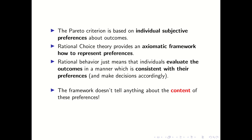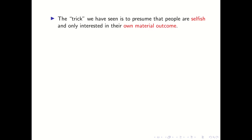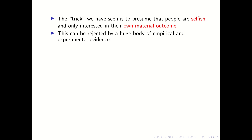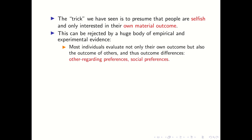Whether an outcome is evaluated as an improvement or as worse off depends on the content of preferences, and the axiomatic framework of expected utility theory does not specify this content. The underlying trick in the previous example was that we presumed people are selfish and only interested in their own material outcome. This assumption can be rejected by a huge body of empirical and experimental evidence from behavioral economics. What we know is that most individuals evaluate not only their own outcome but also the outcomes of others and therefore outcome differences — this is called other-regarding preferences or social preferences.